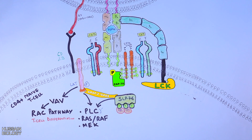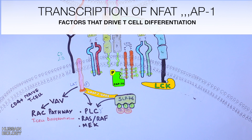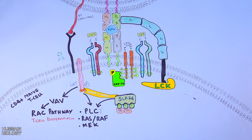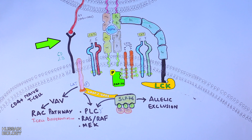In the nucleus, the PLC pathway, RAS pathway, VAV pathway and many others converge and crosstalk, ultimately leading to transcription of factors such as AP1 and NF-κB, which drive T cell differentiation. SLP76 activation also drives allelic exclusion in T cells. Regarding the co-stimulatory signal — the interaction of B7 with CD28 — activated CD28 mediates recruitment of PI3K, leading to NF-κB pathway activation. CD28 activation also leads to VAV-mediated RAS pathway activation.